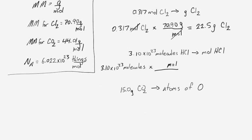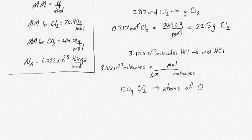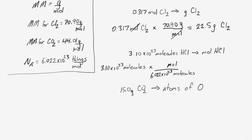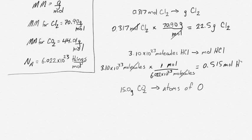We want moles and we have molecules. We know there are 6.022 times 10 to the 23 molecules in a mole, so we set up a ratio. We multiply by 1 over 6.022 times 10 to the 23. Our molecules cancel and we're left with 0.515 moles of HCl.